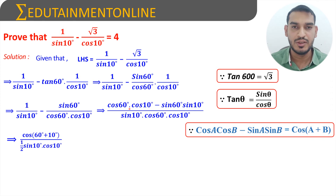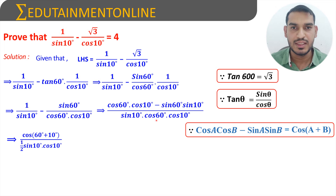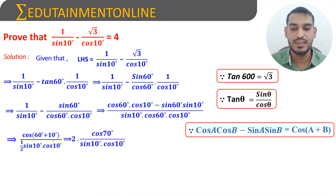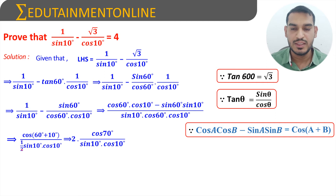Therefore this numerator can be written as cos of 60 degrees plus 10 degrees. We know that cos 60 degrees equals 1 by 2, and the remaining denominator terms are sine 10 degrees and cos 10 degrees. So cos(60° + 10°) is cos 70 degrees, and since 1/2 is in the denominator, we write 2 in the numerator.